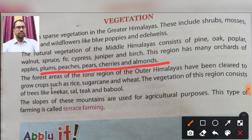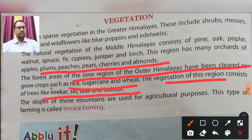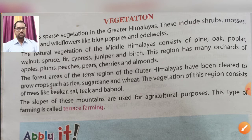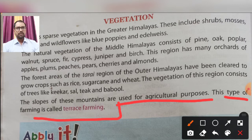The forest areas of the Terai region of the Outer Himalayas have been cleared to grow crops such as rice, sugarcane, and wheat. The vegetation in this region consists of trees like keekar, sal, teak, and babool. The slopes of these mountains are used for agriculture through terrace farming.